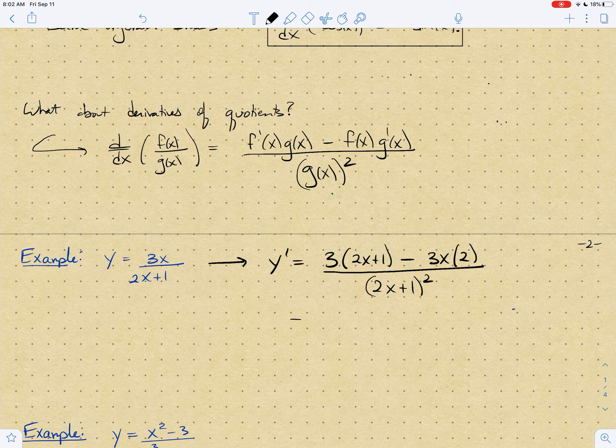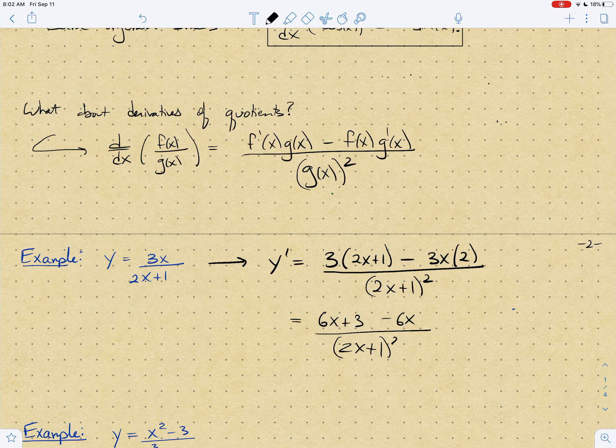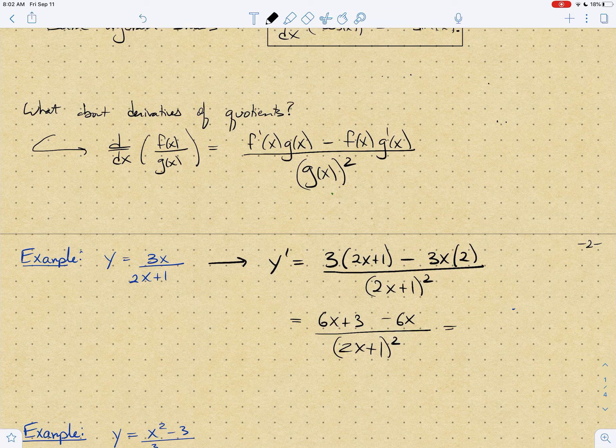And so when I clean this up, I get what? 6x plus 3 minus 6x all over 2x plus 1 squared. And then I'm going to get just a 3